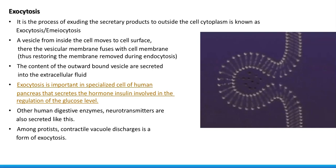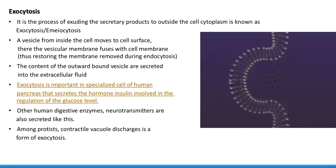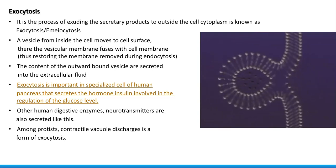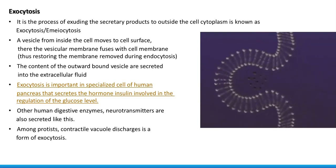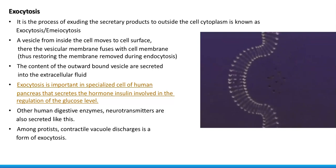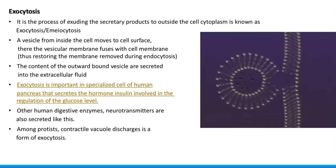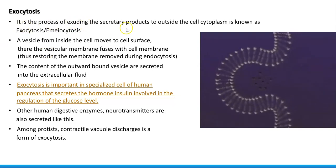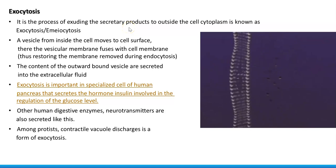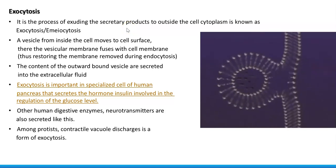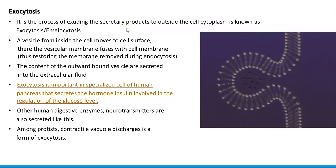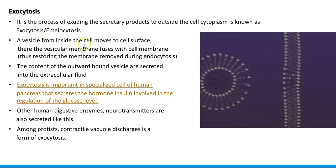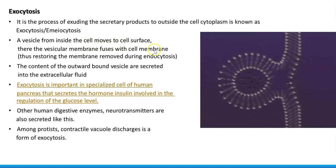Now we come to the last part of this lecture: exocytosis. This process is opposite to that of endocytosis. In the right-hand side you can see a GIF image demonstrating the process of exocytosis. It is a process of expelling secretory products to outside the cell cytoplasm. It is also referred to by another term called emeiocytosis. A vesicle from inside the cell moves to the cell surface.